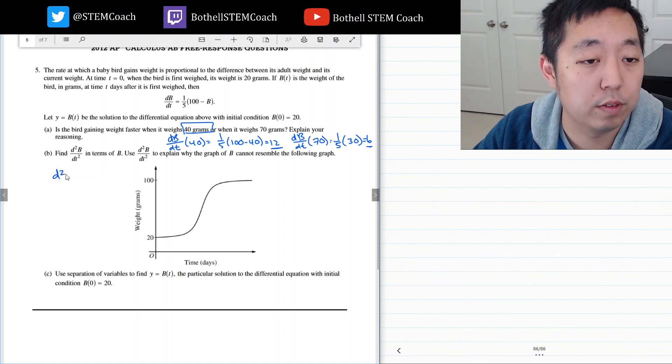Okay, the second derivative of b, I just do the derivative of this side. Let's see, I can leave out the one-fifth and the derivative of this is just negative db/dt.